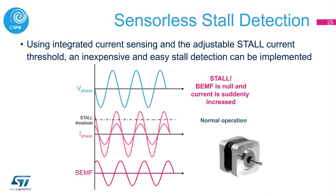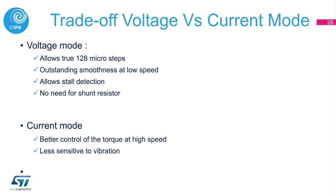Voltage mode control allows us to use sensorless stall detection. Since in voltage mode control we control the voltage applied to the phases, we can monitor the phase current. During normal operation, the amplitude of the phase current is below the stall detect threshold, and we also monitor the back EMF voltage amplitude. If the motor stalls, the amplitude of the phase current suddenly increases significantly, rising above the stall detect threshold, and the back EMF goes to zero. Those two factors confirm that the motor has stalled.